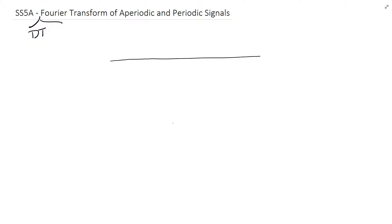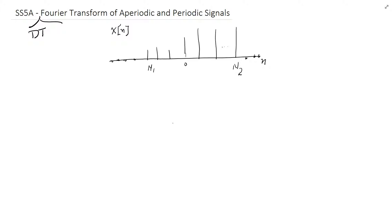Let's say I have a signal with axis n. The signal has some values, and maybe it stops at a certain location at n2, with the rest of the values being zero, then goes back down to some other value — possibly negative — and the rest are zero. So this signal x(n) has a finite duration from n1 to n2.